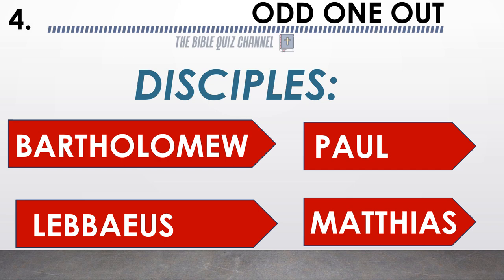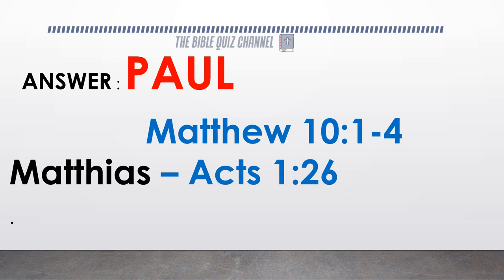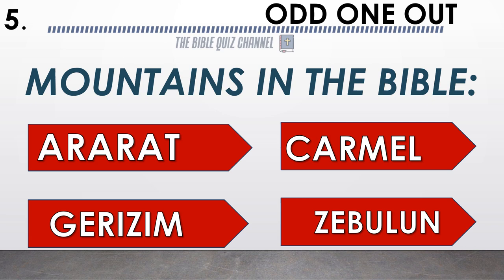Disciples — guess the odd one out: Bartholomew, Paul, Thaddaeus, or Matthias? If you answered correctly, you said Paul. Mountains in the Bible — Ararat, Carmel, Jerusalem, Zebulun — which is the odd one out?